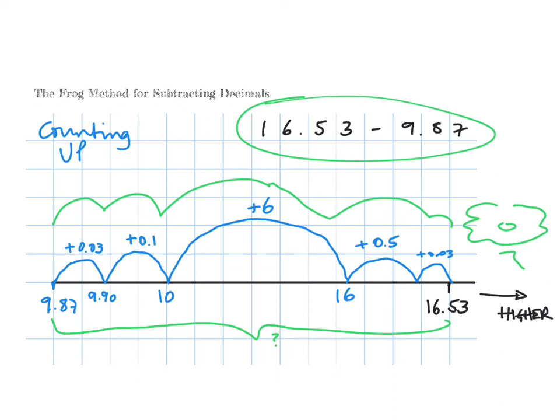Okay, so all it remains for us to do is to add up how much we've moved, and that will give us the answer to this problem. We have moved 6 plus 0.5, which is 6.5, plus 0.1, which is 6.6, plus 0.03, which is 6.63, plus finally another 0.03, which is 6.66 in total. So I think the answer to this is 6.66.